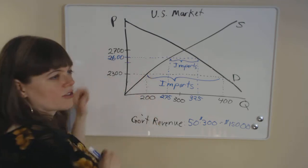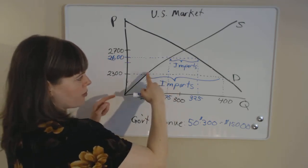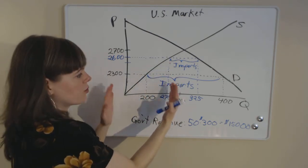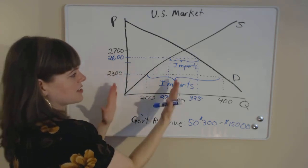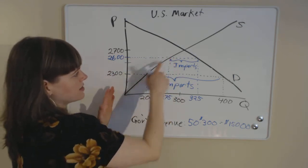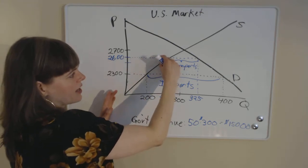When we increase the price through this tariff, a lot more producers were willing to enter the market. In fact, 275 producers were willing to produce for this price of $2,600. So we can calculate the producer surplus, and it's going to be this triangle here, because that's adding up the value of each particular producer who's participating in the market.